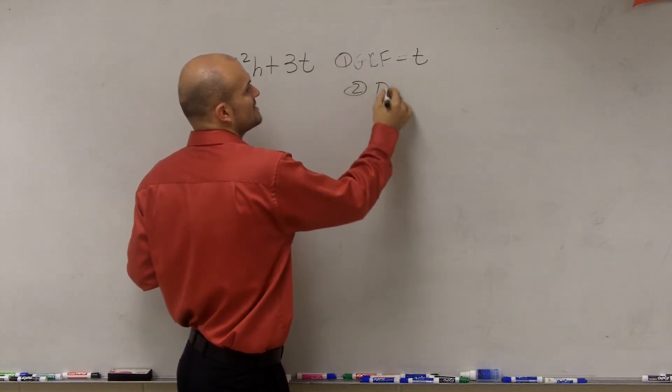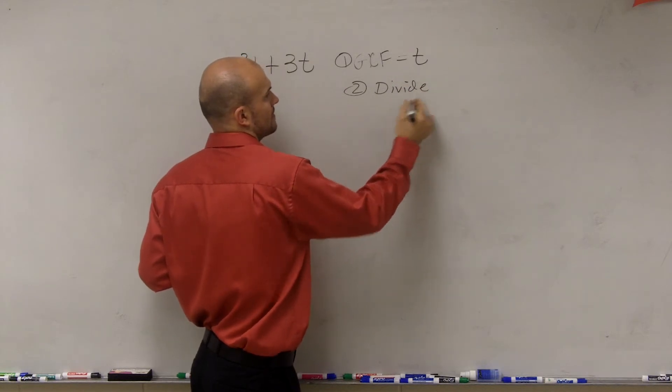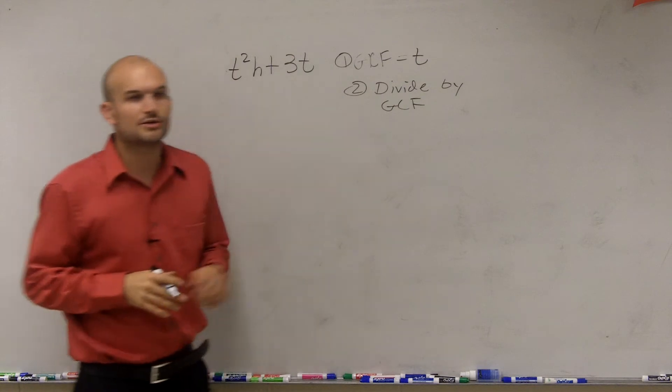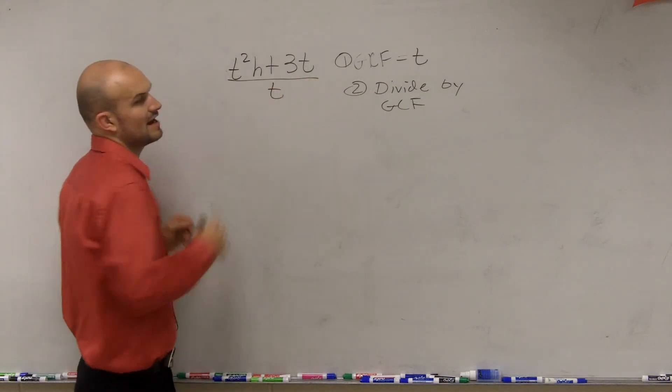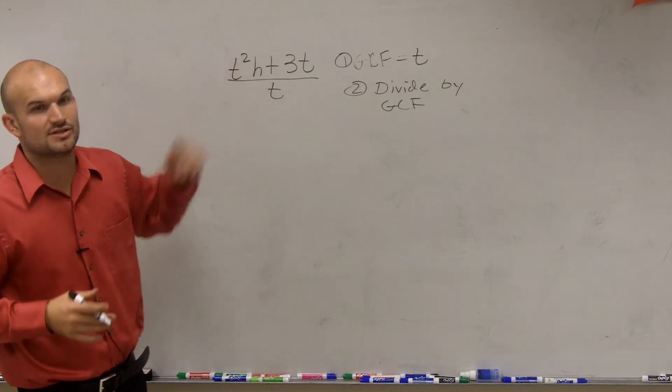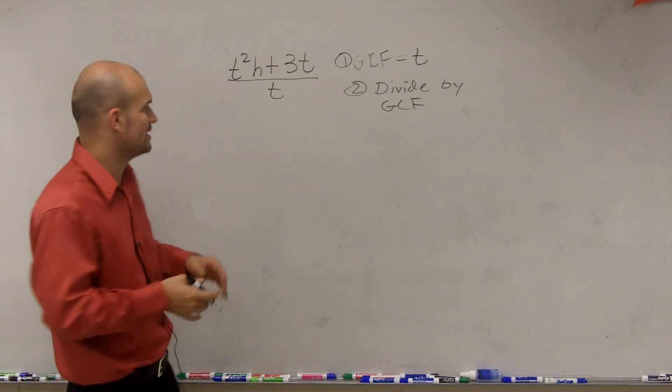The next thing we need to do is divide by our GCF. So I take my whole term and I divide by my GCF. Now remember, we have t squared times h divided by t. How do you really divide this into there? What is this going to look like?